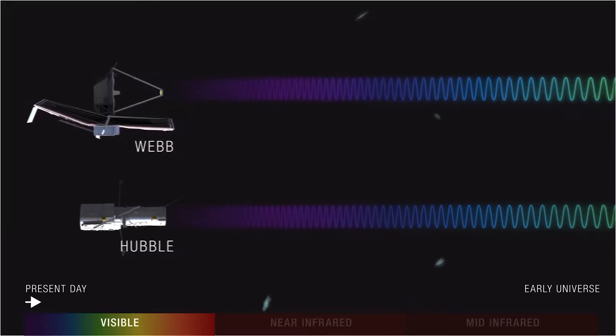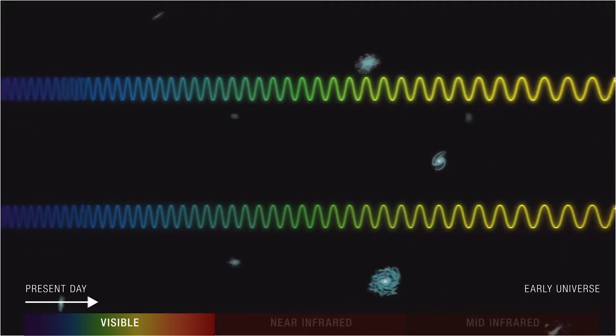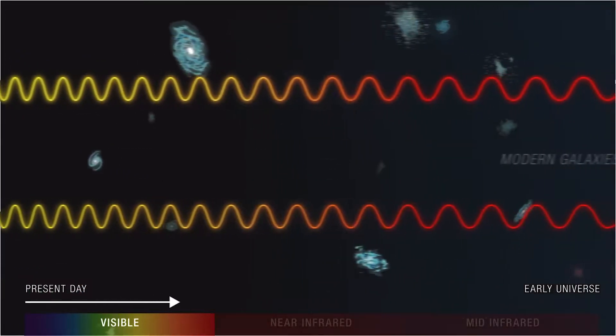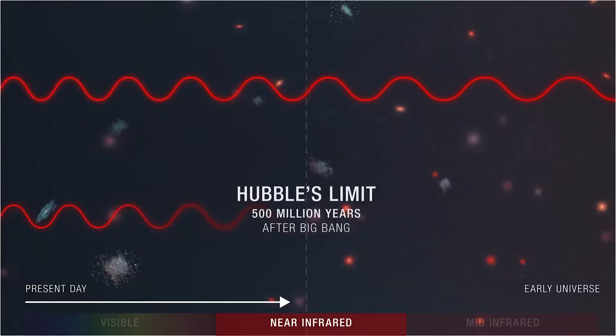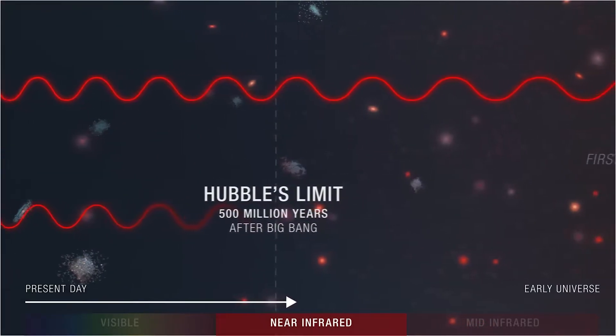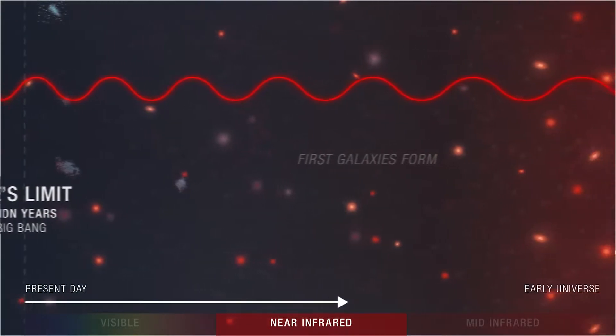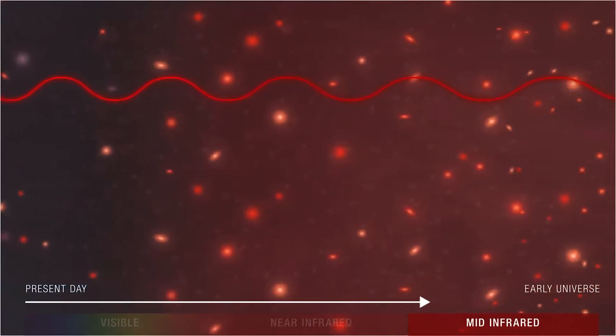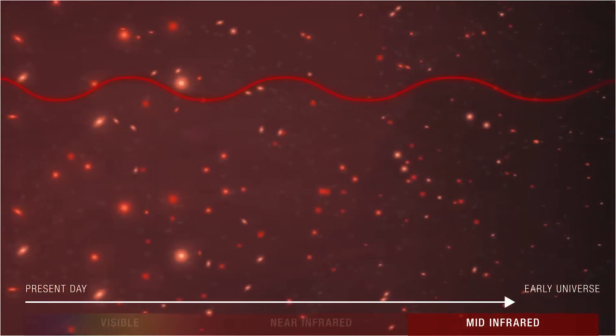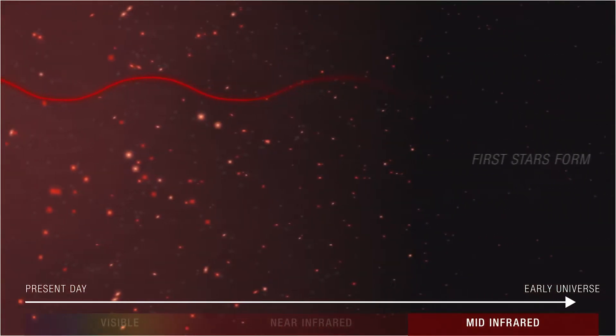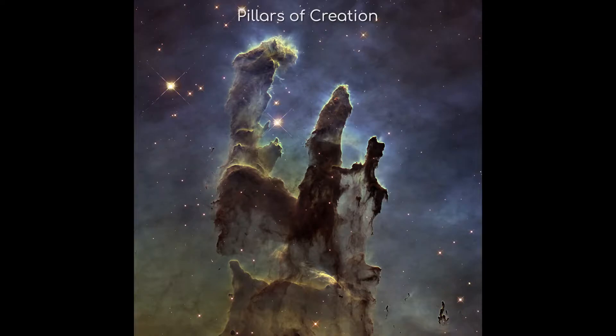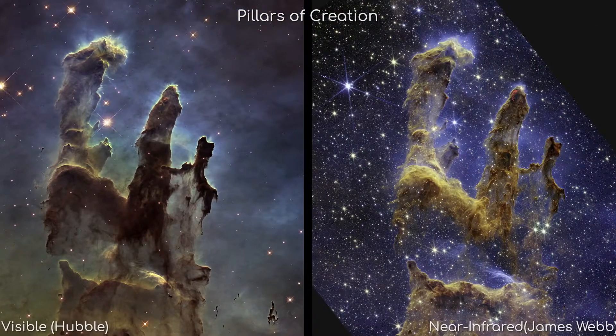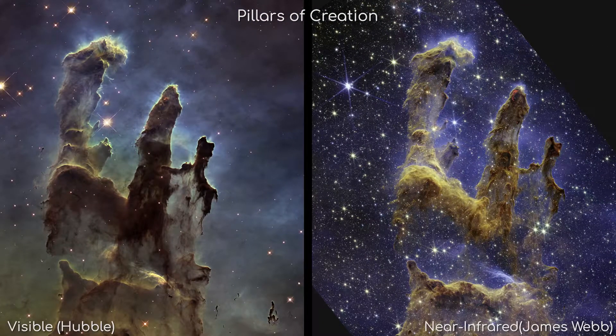Due to the expansion of the universe, all of the light from the furthest reaches of space have been stretched to the point that no matter what they were to start with, they are all at least infrared light now. So the only way to see these light sources is with an infrared telescope. On top of that, infrared is much better at punching through dust clouds and other obscuring debris, giving the James Webb telescope the incredible ability to see objects that are beyond the sight of Hubble.